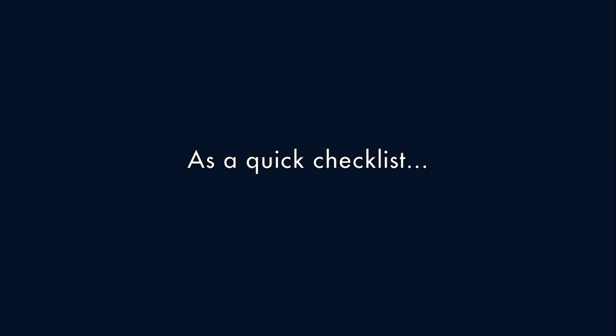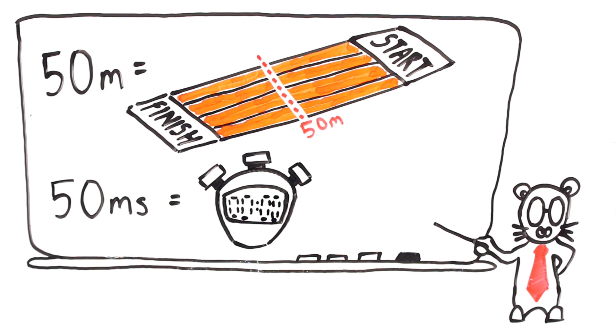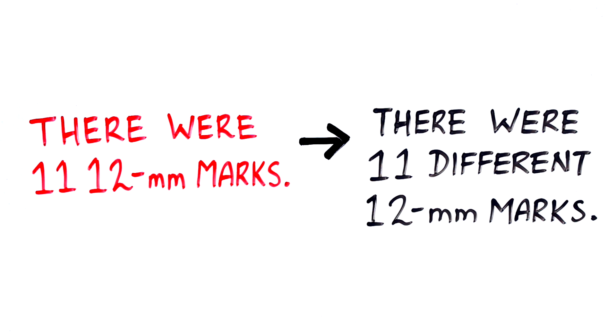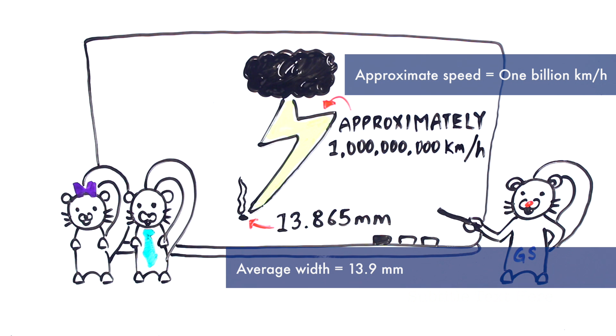As a quick checklist, make sure you use the right abbreviation for your unit of measurement, and don't pluralize this abbreviation by adding an S. Try not to put two distinct numbers next to each other, as this can confuse your readers, and only report the number of significant figures you are able to measure.